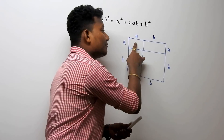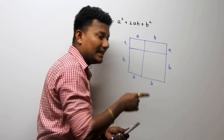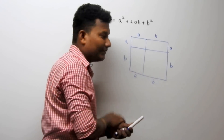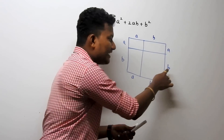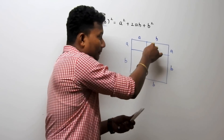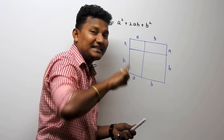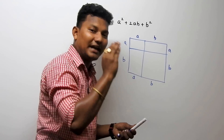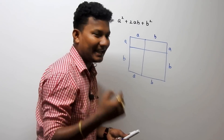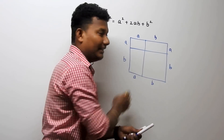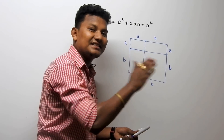The first box is in the form of a square because its adjacent sides are the same. The fourth box is also a square because its adjacent sides are the same. But the second and third boxes are not squares — they are rectangles, because their adjacent sides are different.